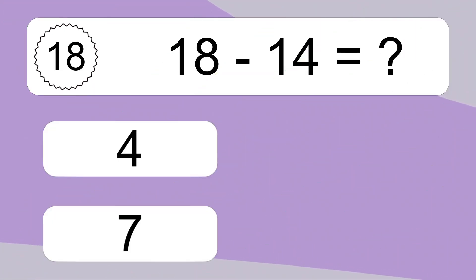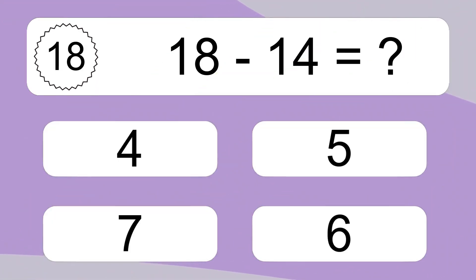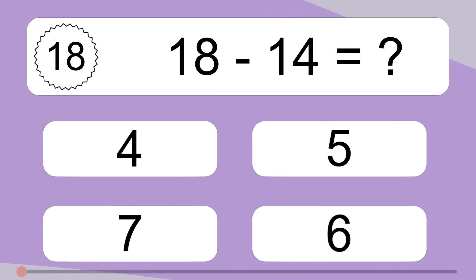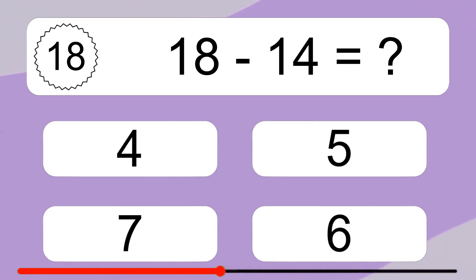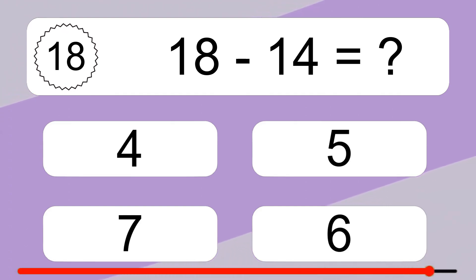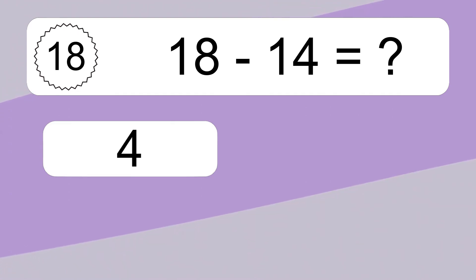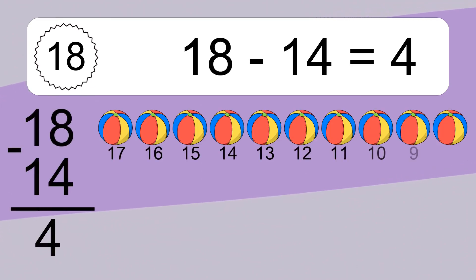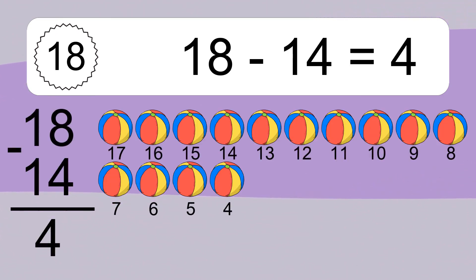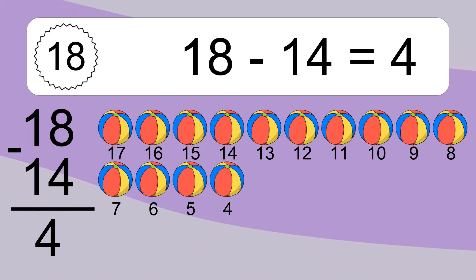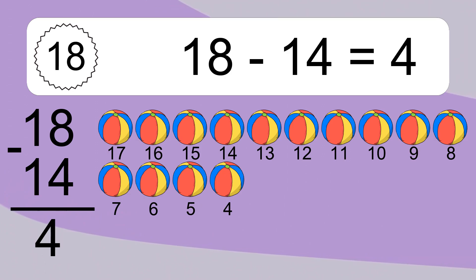18 minus 14 equals what? 18 minus 14 equals 4. Let's count it: 17, 16, 15, 14, 13, 12, 11, 10, 9, 8, 7, 6, 5, 4.